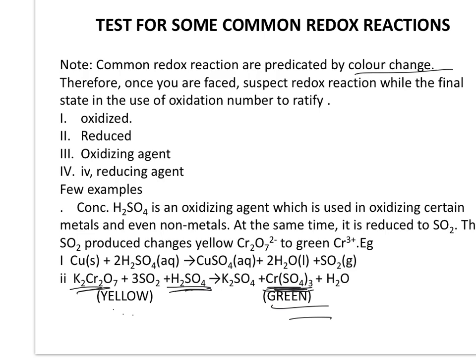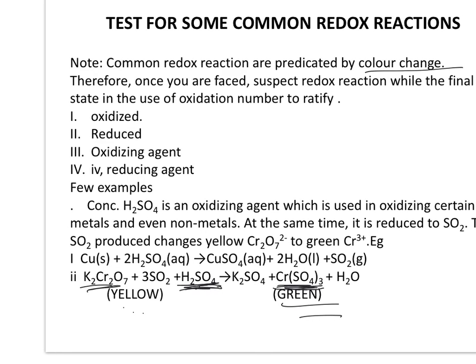H₂SO₄ is the oxidizing agent, but it itself gets reduced in the process. In the same way, the reaction between copper and 2H₂SO₄ gives CuSO₄ plus 2H₂O plus SO₂. This is also a redox reaction taking place between Cu and H₂SO₄, which acts as the oxidizing agent.